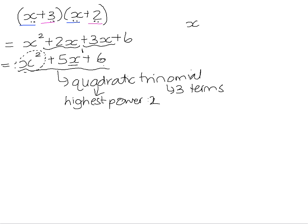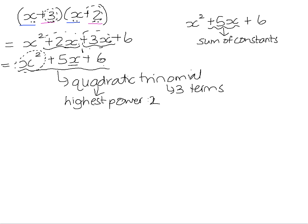If we analyze the product x squared plus 5x plus 6 a little further in terms of the brackets, the middle term was arrived at by adding 2x and 3x. If you look at the constants in the brackets, you'll notice that 5 is the sum of the constants in the brackets — we add 2 and 3 to get the coefficient of 5. Because we had to multiply the 2 by x and the 3 by x, that's why we end up with 5x.